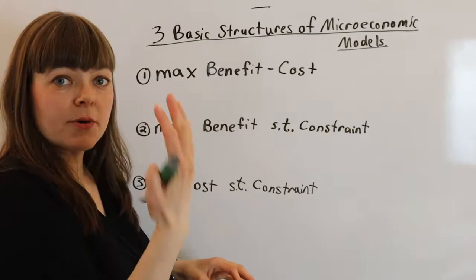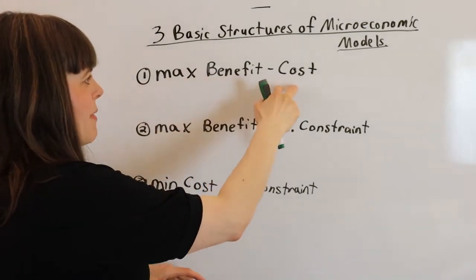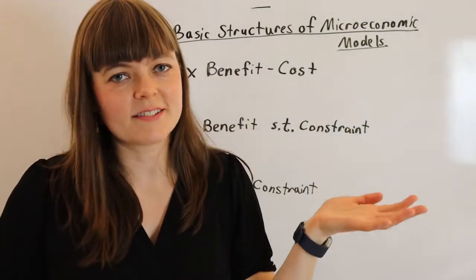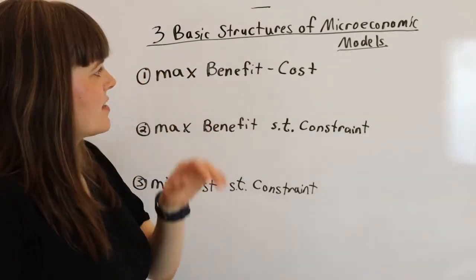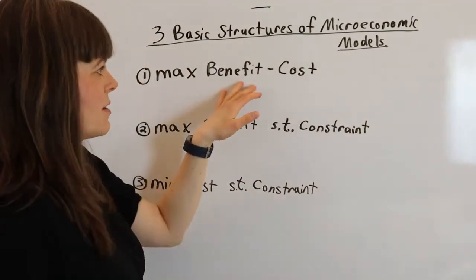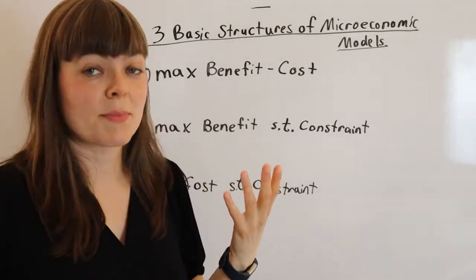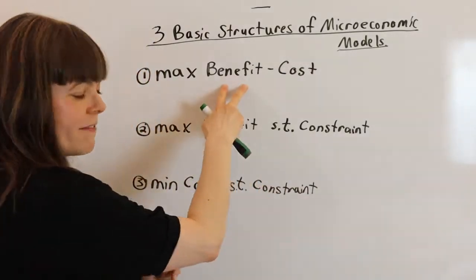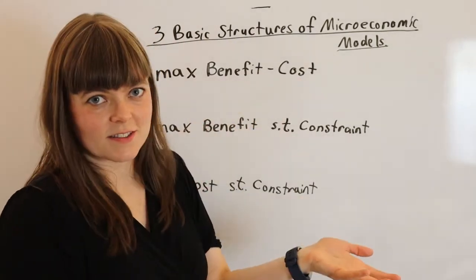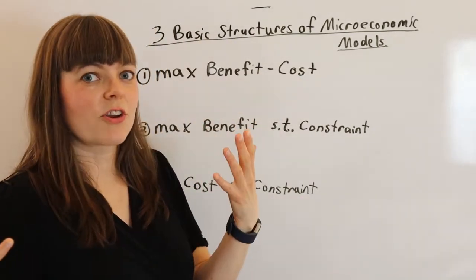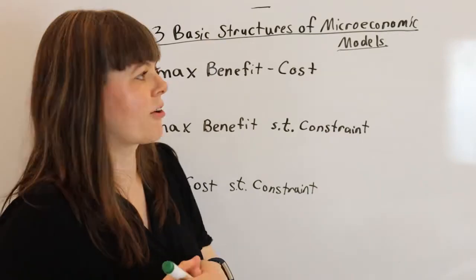The most classic is maximizing benefit minus cost. Cost-benefit analysis is what economists spend much of their careers doing, and this is represented most classically in the maximizing profit function because the benefit in that case is revenue. The cost is the cost to the firms, so that's where you'll see this most often in a microeconomics course.